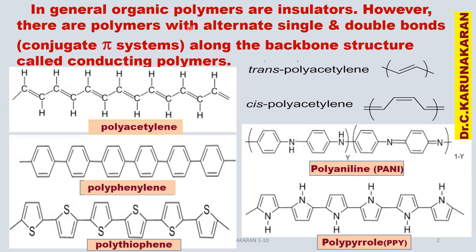In general, organic polymers are insulators. We know that organic polymers are used for electrical wiring — they are insulators. However, recently conducting polymers were synthesized and were given the Nobel Prize. There are certain polymers having alternate single and double bonds — one double bond, then one single bond, then one double bond — called conjugated systems. These conjugated systems with alternate single and double bonds along the backbone structure are called conducting polymers.